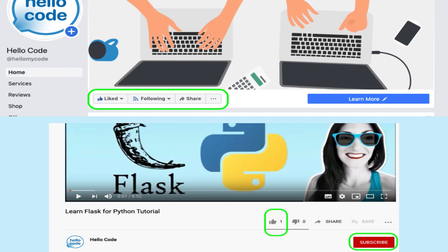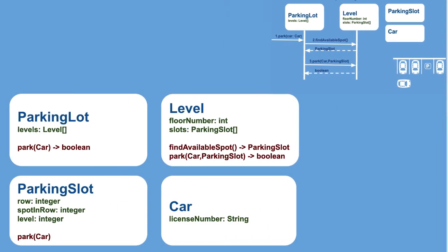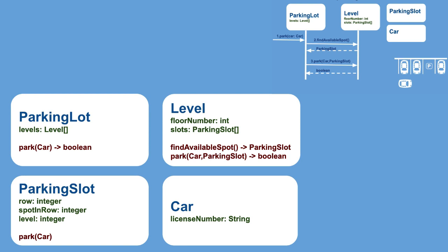To recap, let's go back to the design from the previous video. This is a design where we have four classes representing the entities of our problem, the relevant data, and in red the actions each of those classes can perform. The classes are Car, Parking Slot, Level, and Parking Lot. Let's start with the simplest, which is the Car.